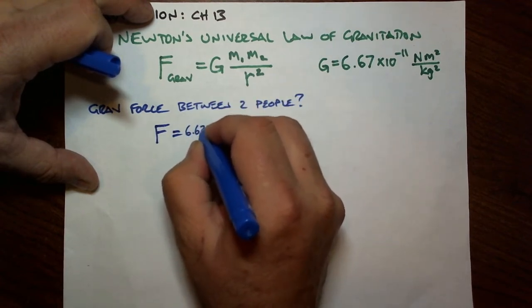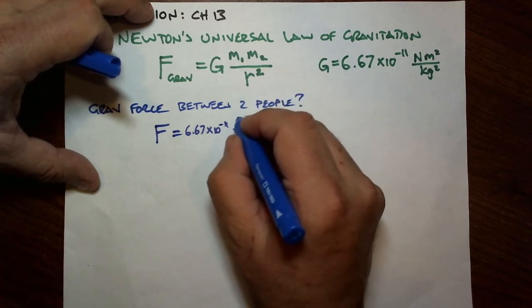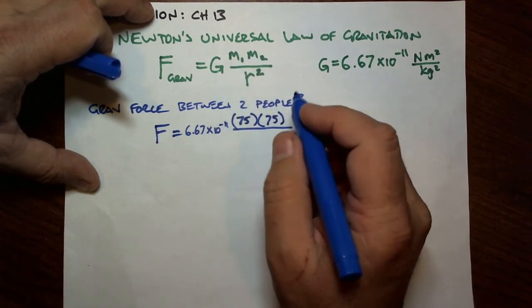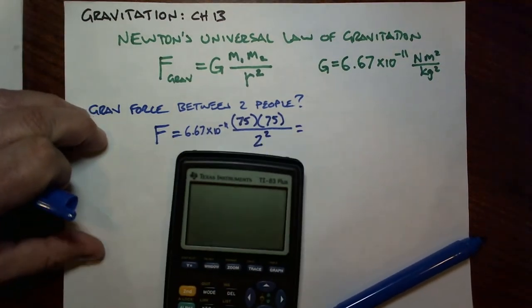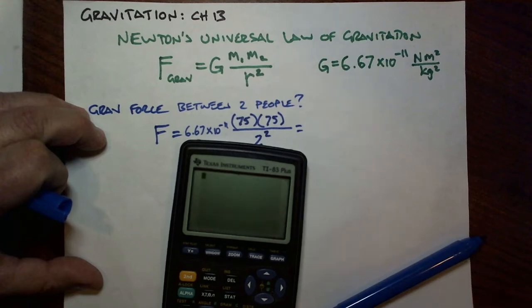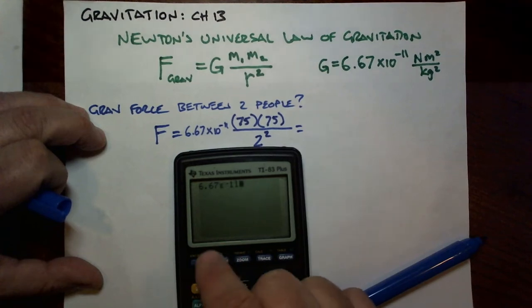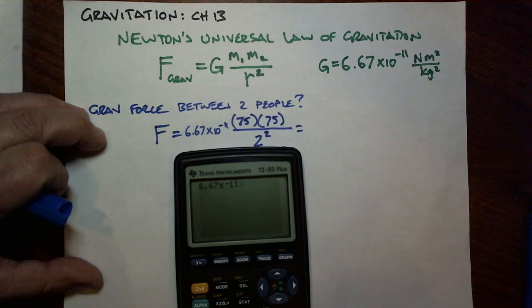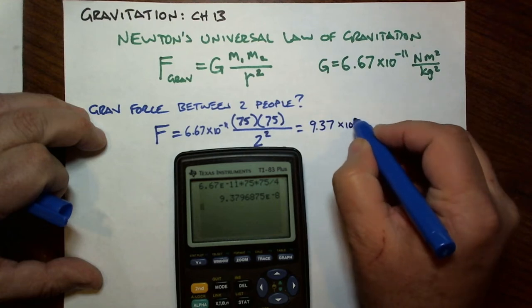The constant is 6.67 times 10 to the minus 11. The average mass of an adult person is about 75 kilograms, so 75 going once and 75 going twice, one for each person. 6 feet is about 2 meters, and that needs to be squared. Handy dandy calculator. 6.67 times 10 to the negative 11 times 75 times 75 divided by, well, 2 squared is 4, so let's just do that in our heads.